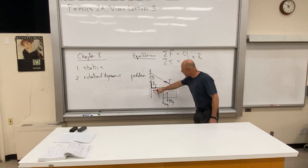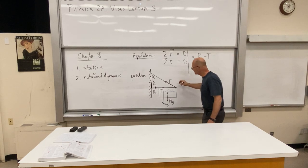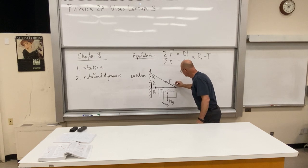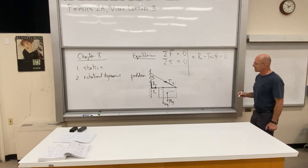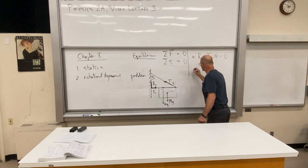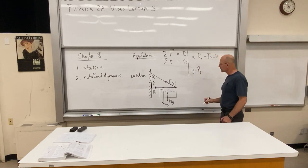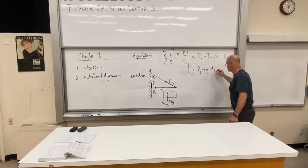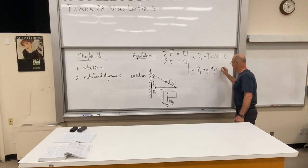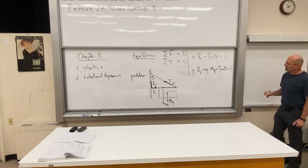The x forces: R_x pointing to the right minus T sine θ equals zero. In the y direction we have R_y pointing up, minus mg pointing down, minus capital Mg pointing down, plus T cos θ pointing up equals zero. That's the equilibrium condition in the y direction.